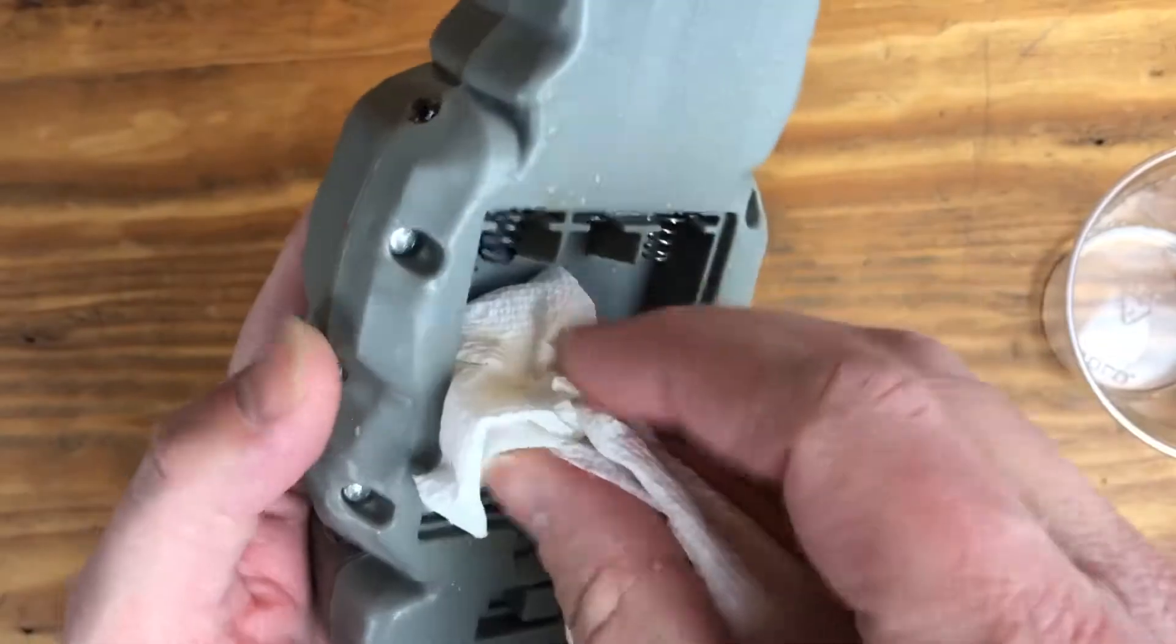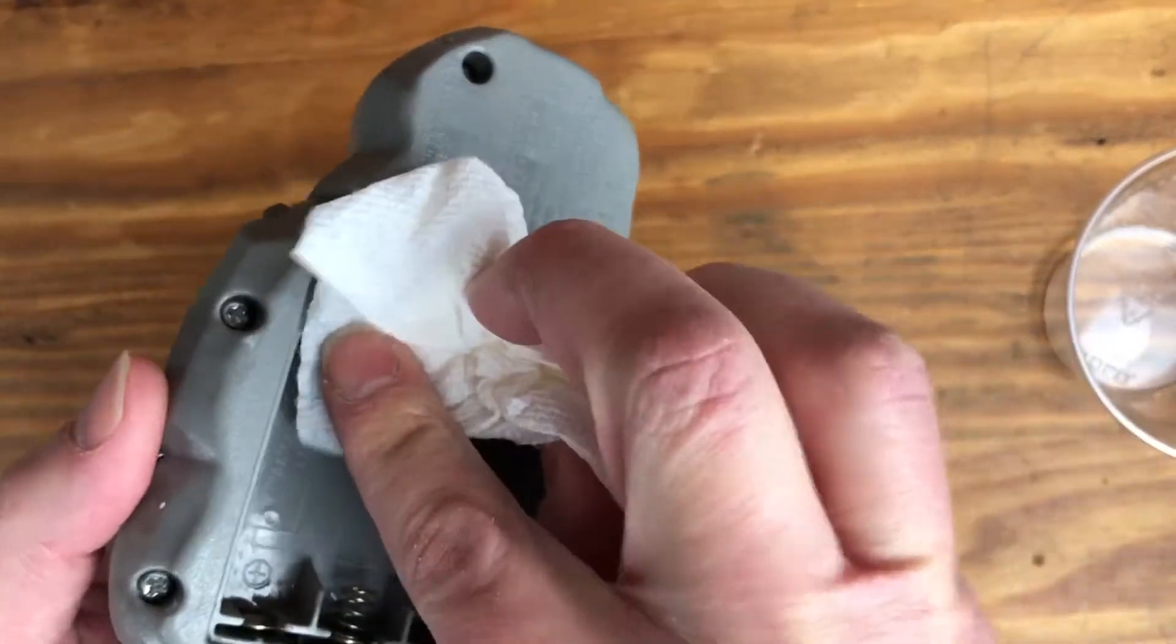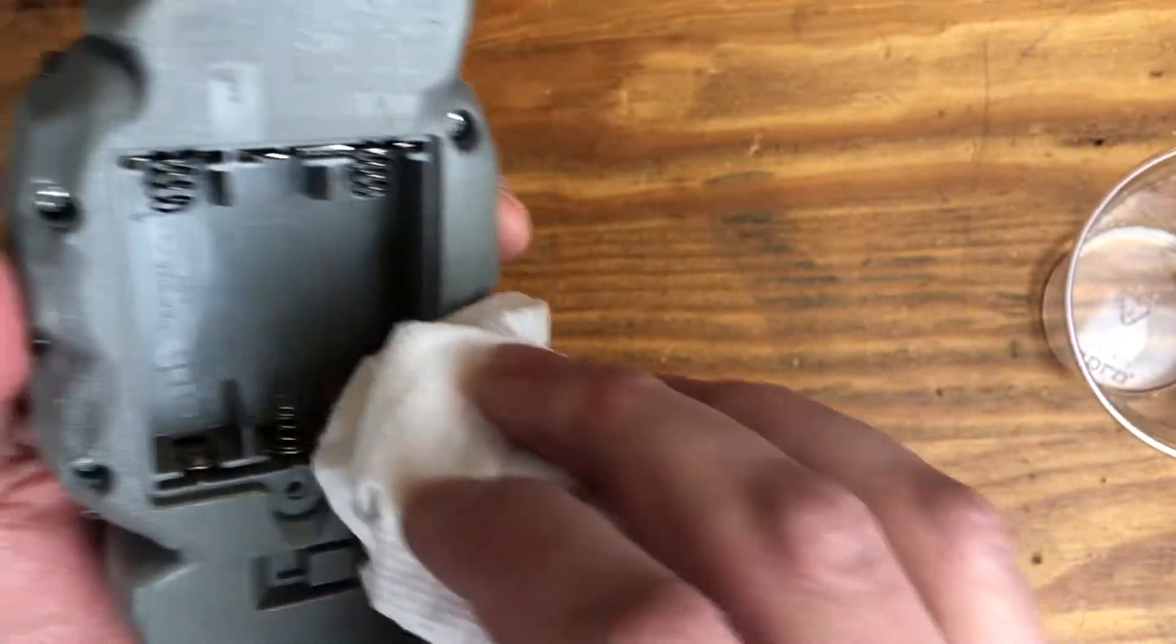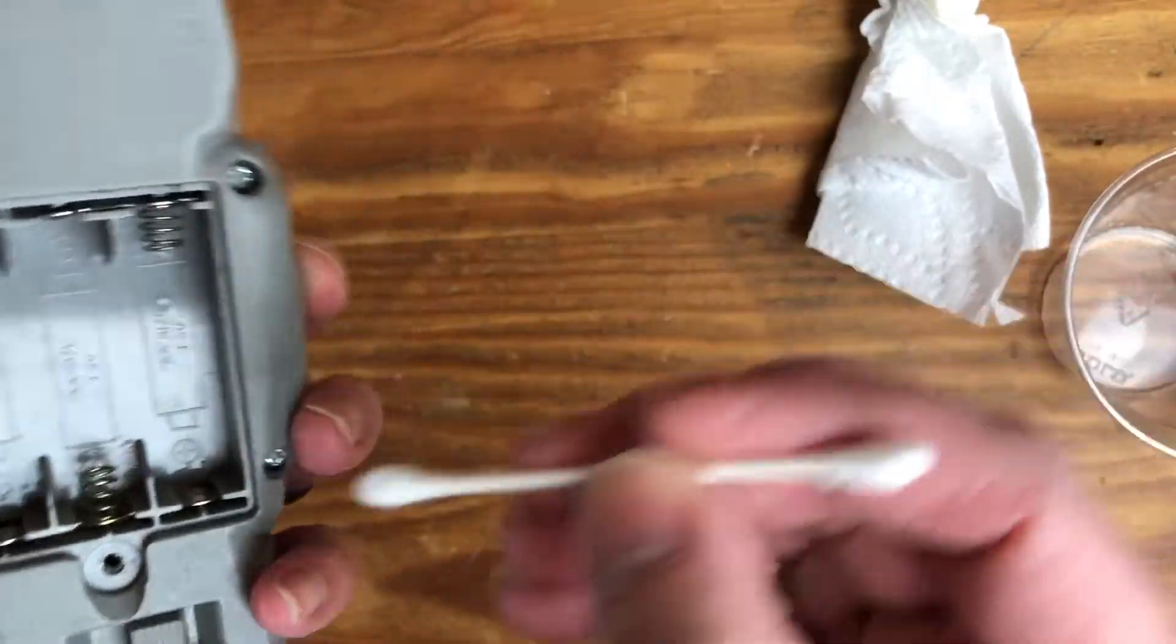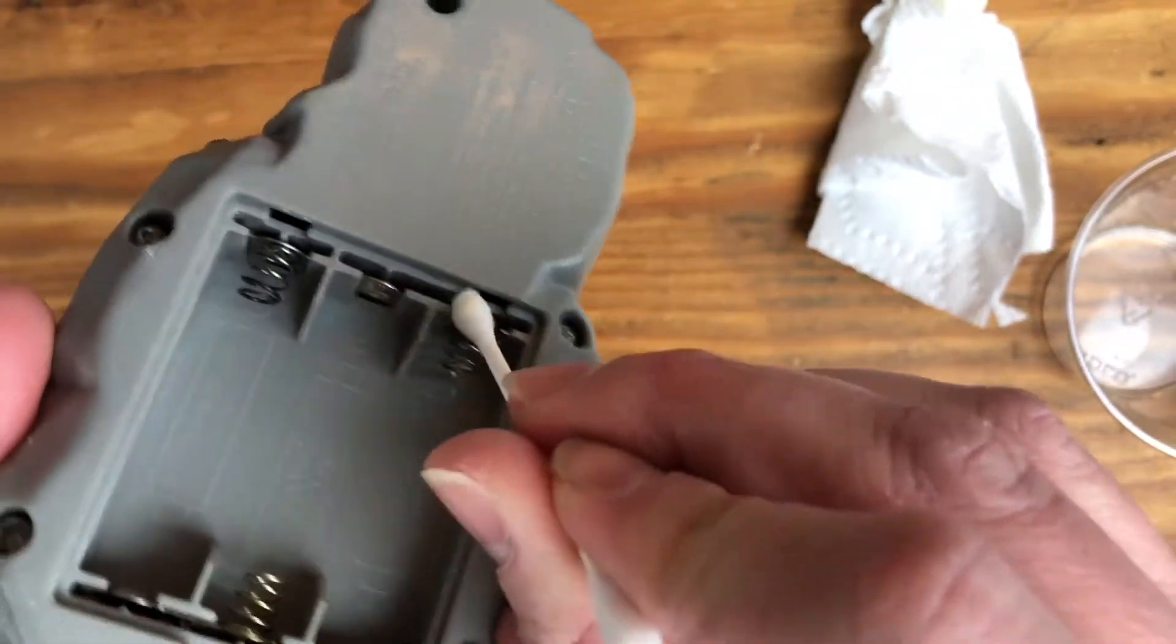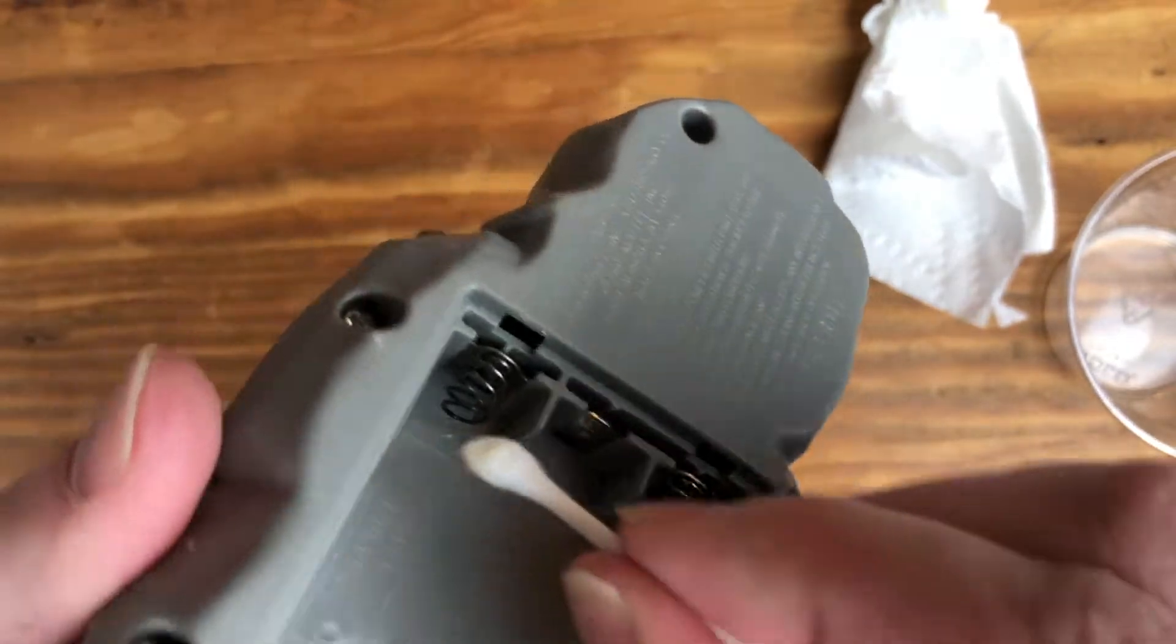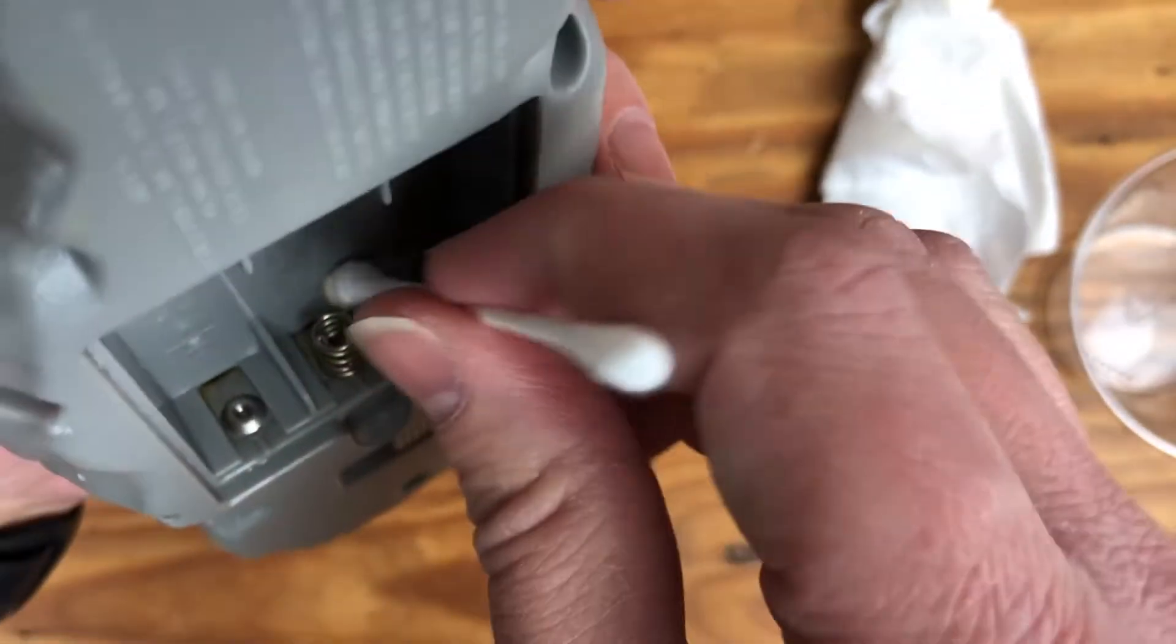Next thing you want to do is just kind of pat it dry with a paper towel or a cloth of some sort. You don't want a ton of that vinegar in there. You can also use a q-tip and just kind of rub it around in there, try to dry it off a little bit after it's been sitting for a few minutes trying to get all the corrosion off.